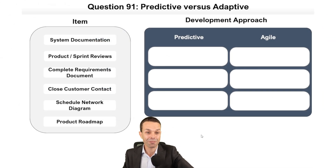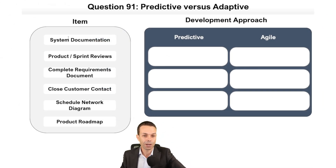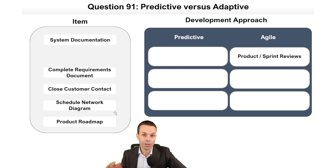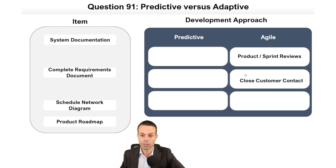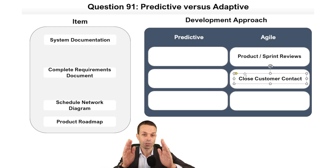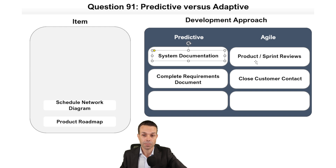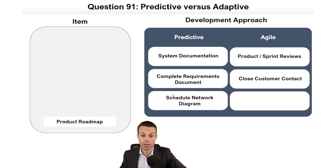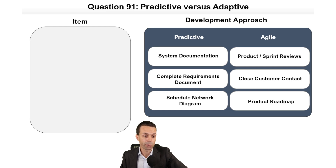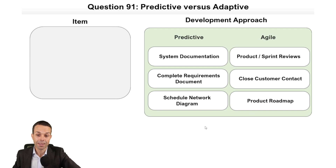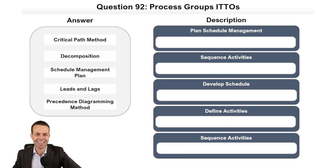Let's get into the first question — one of my favourites: agile versus predictive. In agile, we have product and sprint reviews at the end to see if our increment matches what the customer wanted. Close customer contact means we prefer talking face-to-face for visual and tonality cues. In predictive, we have a complete requirements document, system documentation, and a schedule network diagram — whereas in agile, we use a product roadmap instead.